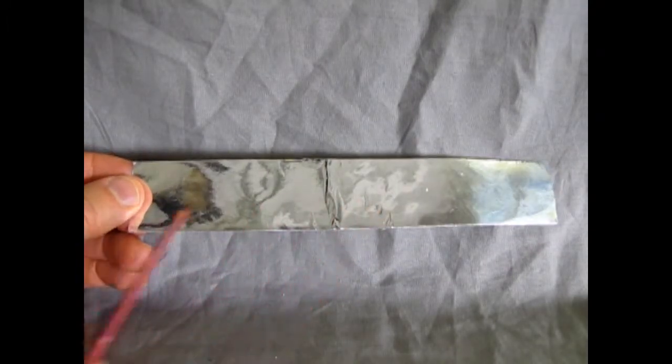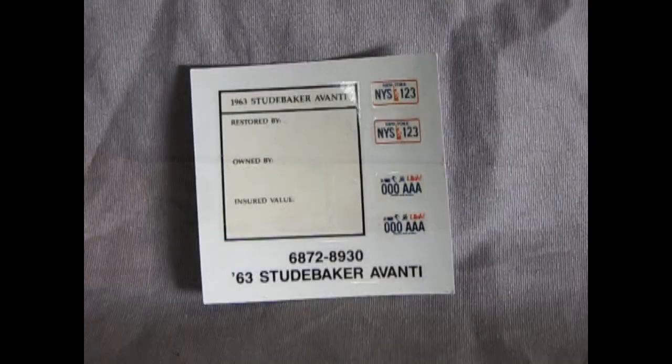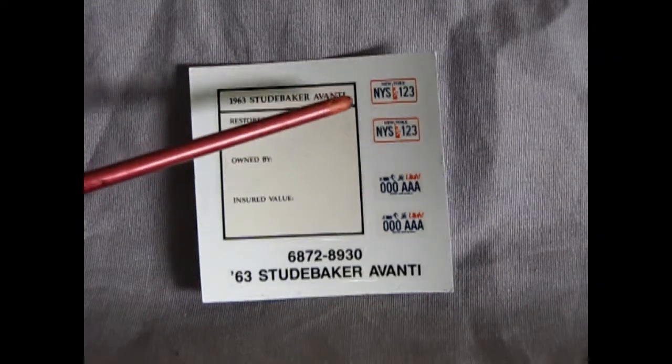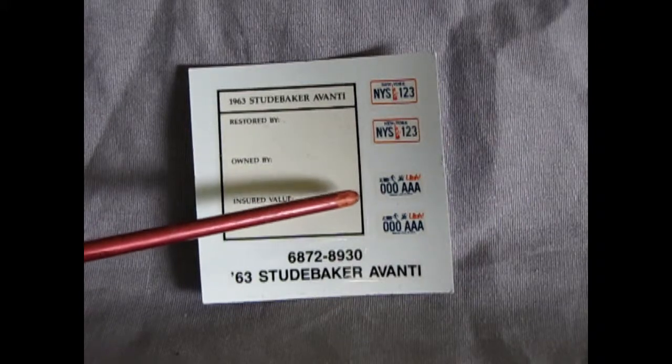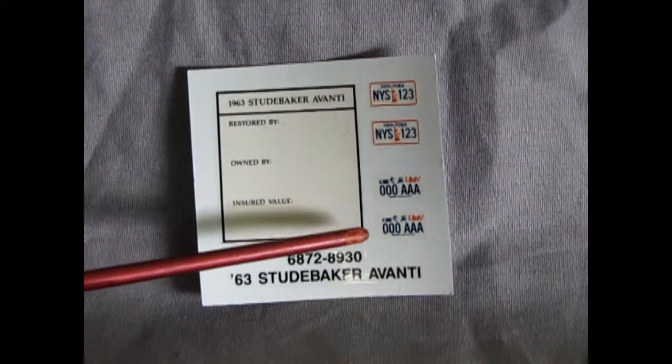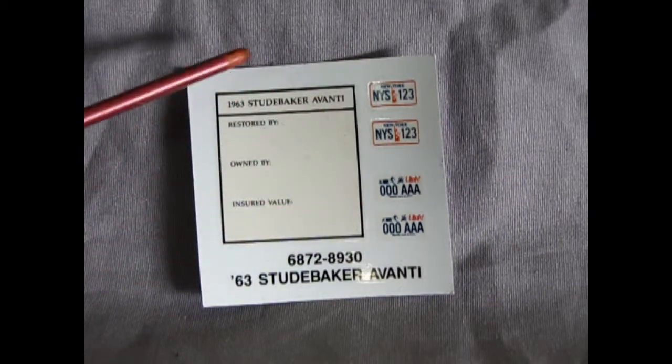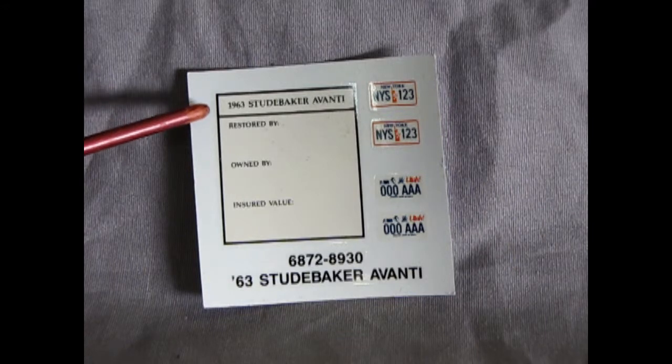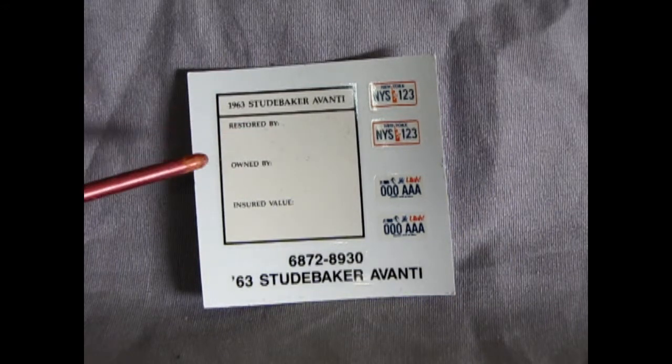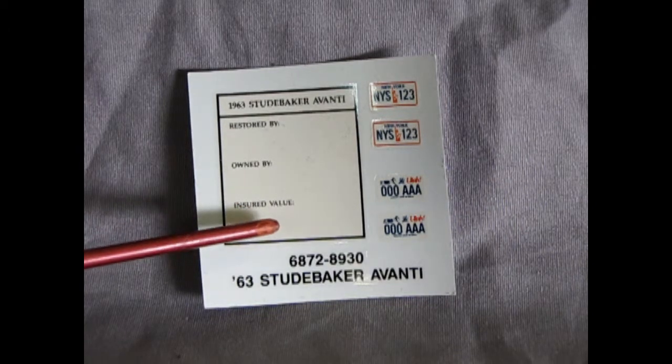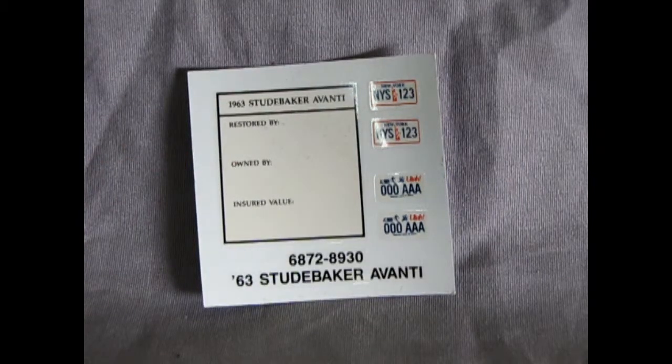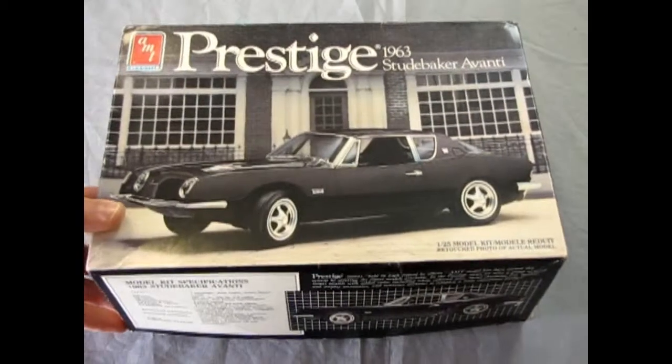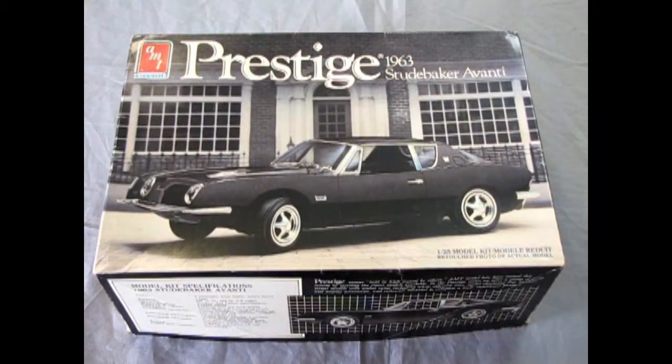Also included in this kit is this foil sticker which you use like bare metal foil now, and you can see me in there. Use this as bare metal foil and you can apply it to the side of your car. Finally, we've got our decal sheet. Now here we have New York State license plates that say NYS123 and the old Utah 000 AAAA license plate. Did anybody actually have this? It's really unique. Okay, and then here this is the sticker or the decal for our easel. So it says 1963 Studebaker Avanti, restored by blank, owned by blank, and insured value. So you could actually take a little teeny Sharpie and write in those details if you want. And that completes our review of the AMT Ertl Prestige Series 1963 Studebaker Avanti.